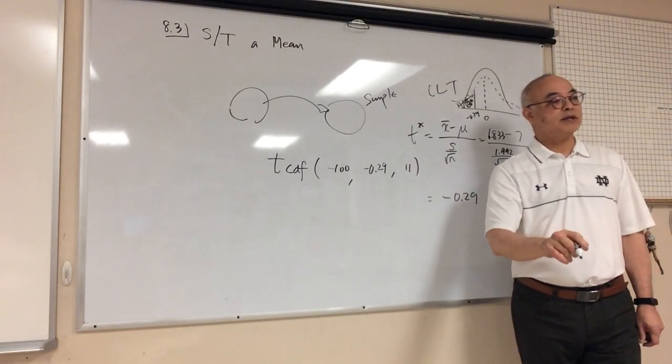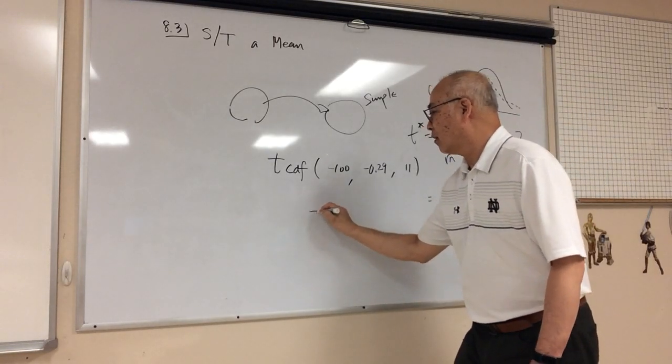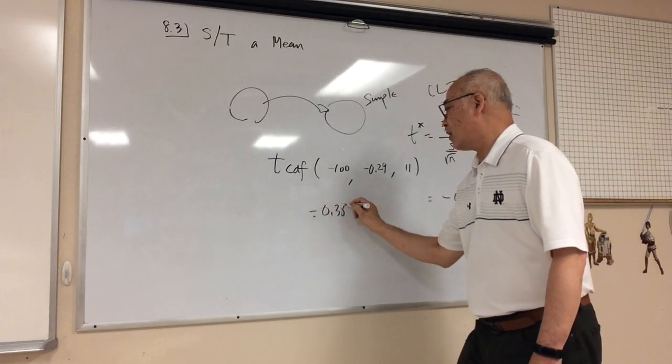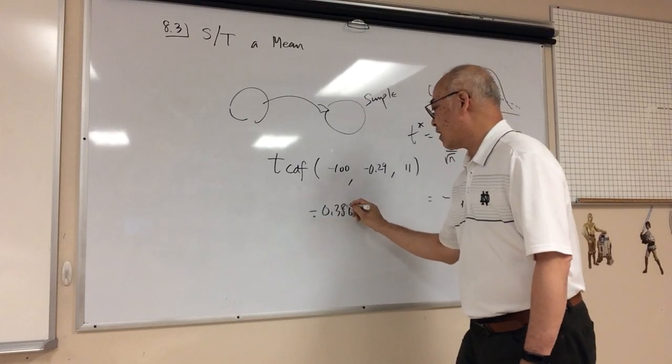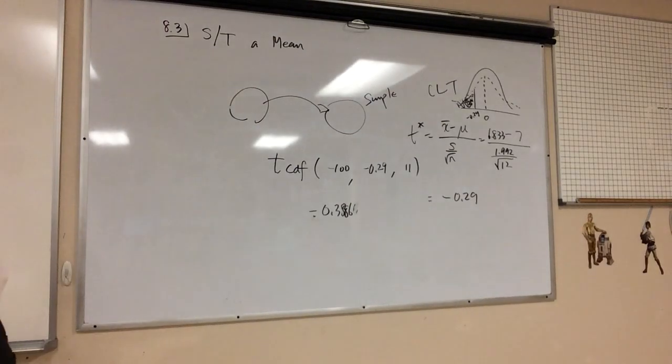Now if I do that, what do I get? 0.3886, which is what the book's got also.